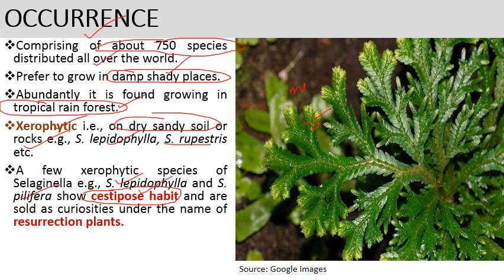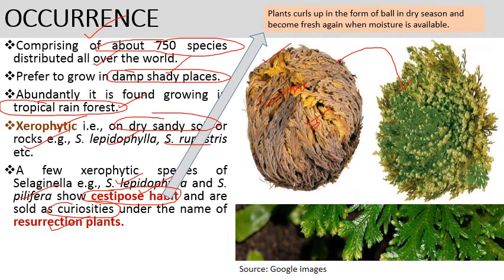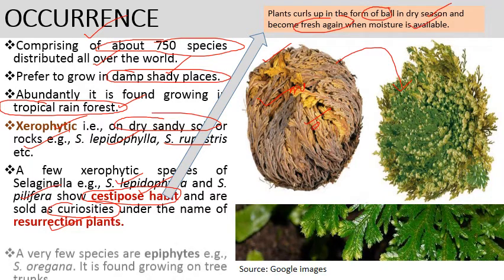These xerophytic species show cespitose habit — under dry conditions the plant body curls up in the form of a ball-like structure, and when moisture is provided it becomes fresh again. These plants are sold as curiosities under the name 'resurrection plants' — plants that dry in dry weather but regain their viability when provided with moisture.